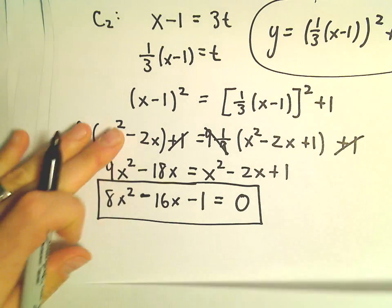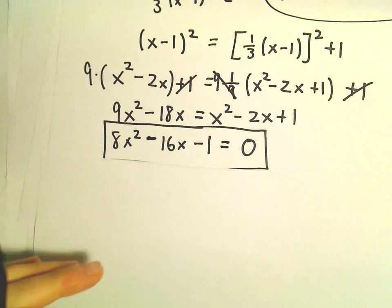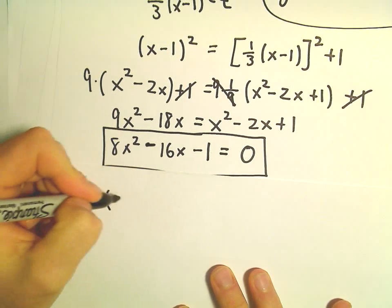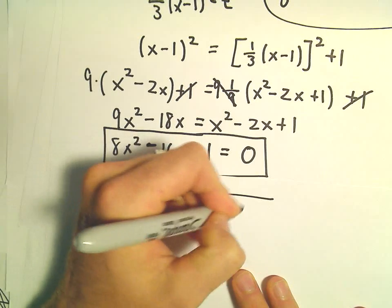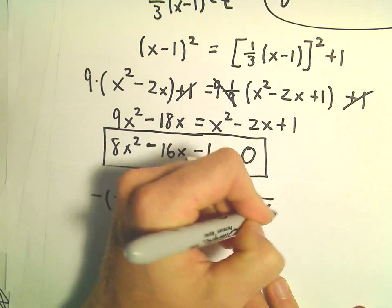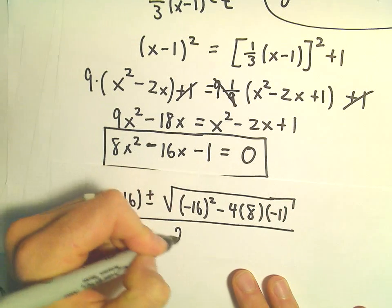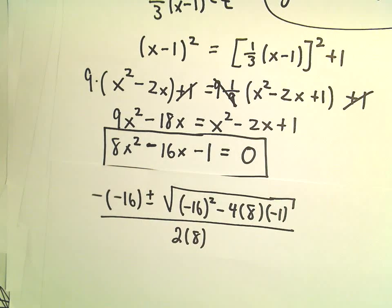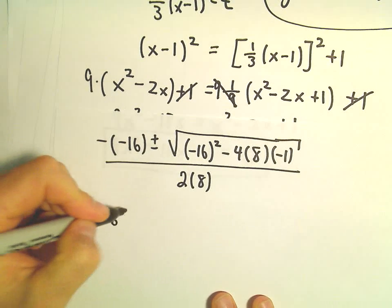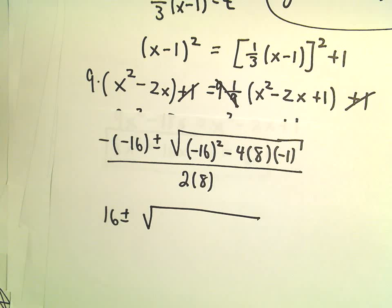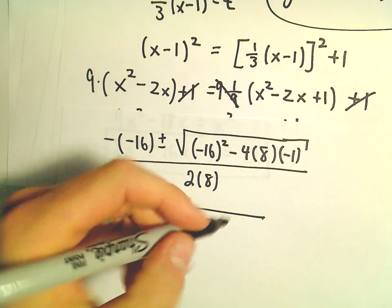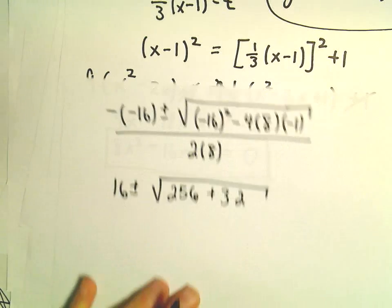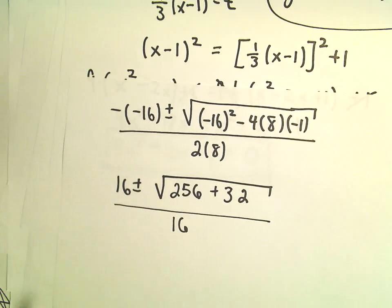All right, so now we've got our nice little quadratic equation here. I'm going to use the quadratic formula. So negative B plus or minus the square root of B squared minus 4 times A times C all over 2 times A. So I think we're going to get some maybe not so friendly numbers here, but that's okay. So let's see, we've got 16 squared, that should be 256. And then we've got negative 4 times 8, that'll be negative 32. Then we'll get a positive 32 after multiplying by the negative 1. All over 2 times 8, or again, 16.